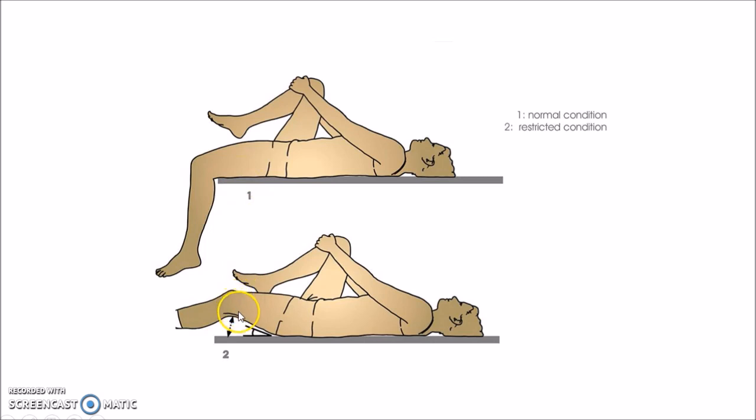Whereas in case of flexion deformity, there will be an angle between the patient's thigh and the examination table. We can measure this angle and this angle is the degree of flexion deformity.